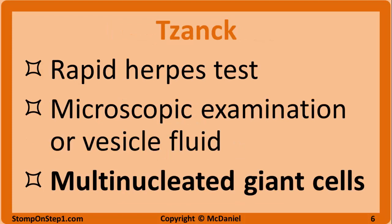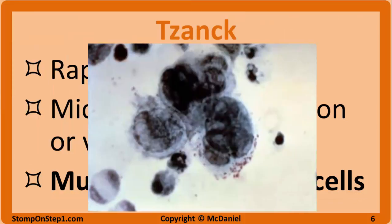The diagnosis of these viruses is usually made clinically. However, there are tests that can aid in the diagnosis. A Tzanck test, aka Tzanck smear, is a rapid test that can be performed when a herpes virus is suspected. A skin vesicle is broken open and smeared on a slide with a specific stain. Microscopically, if multinucleated giant cells with intranuclear inclusions are visible, it is a positive result. Here is a picture of what a positive Tzanck test looks like.